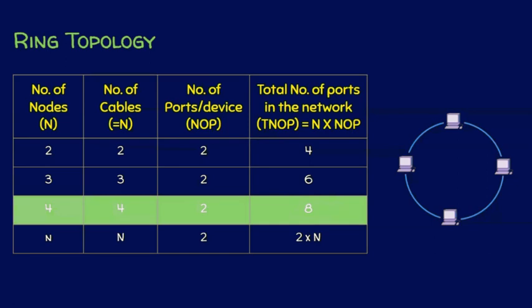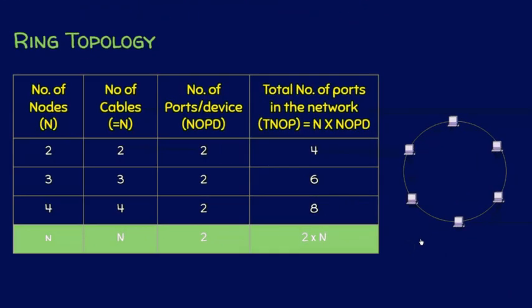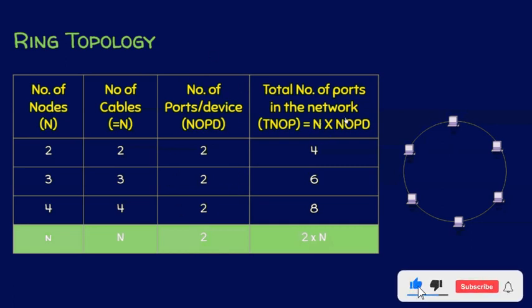If there are a hundred nodes in a ring topology, it is very difficult to manually draw them all, so we need a formula. The generic formula is: if there are n nodes, then we need n cables. Each node must have two ports; therefore, the total number of ports in the network equals two into n. As far as ring topology is concerned, the number of ports per device will always be two, so two multiplied by the number of nodes gives the total number of ports.